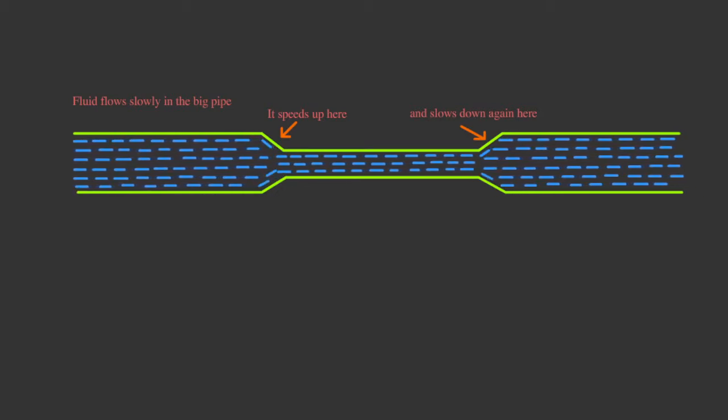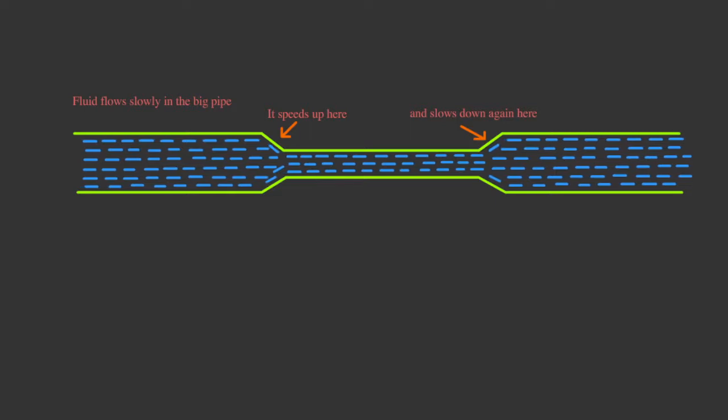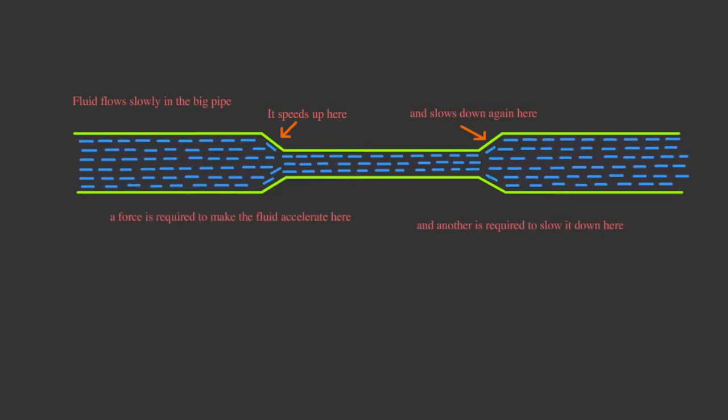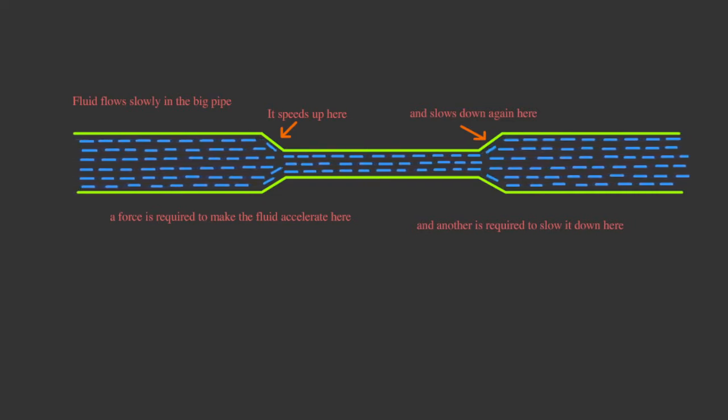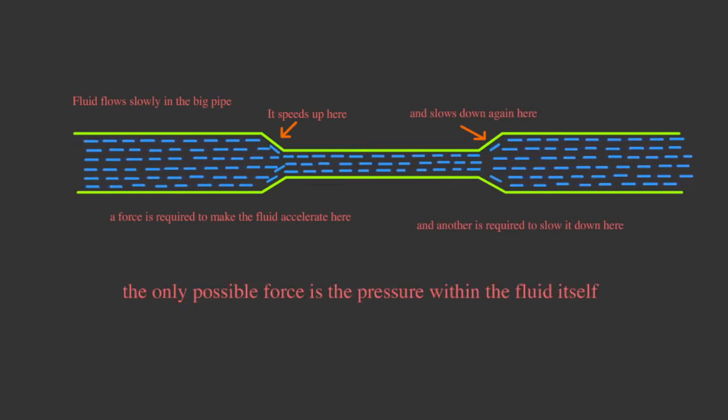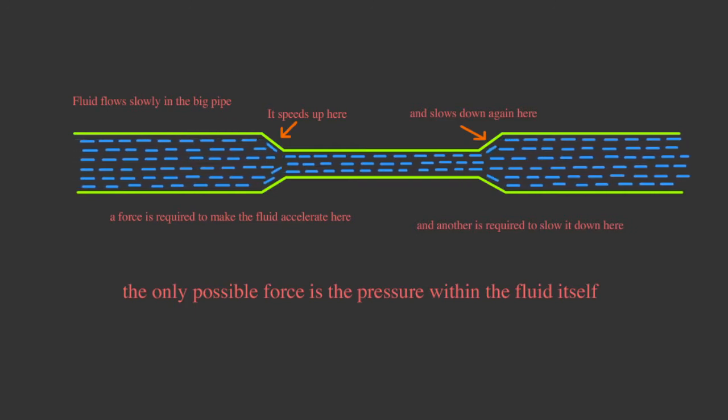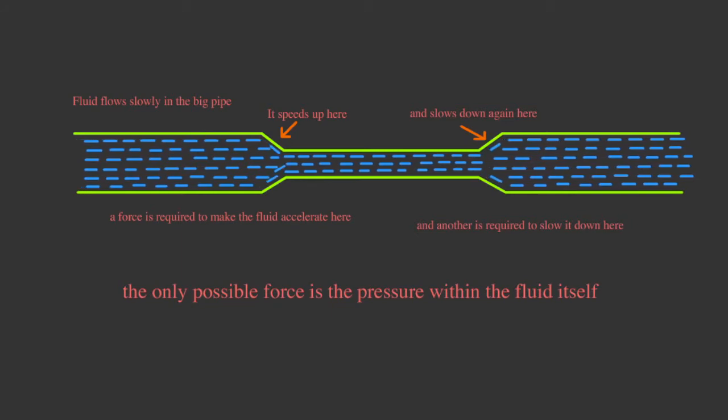In order to make it speed up there must be a force applied to accelerate it, and in order for it to slow down there must again be a force applied but in the opposite direction. The only possibility for a force to be supplied is from the pressure within that fluid. That is higher pressure in the larger tubes to make it speed up and then slow down.